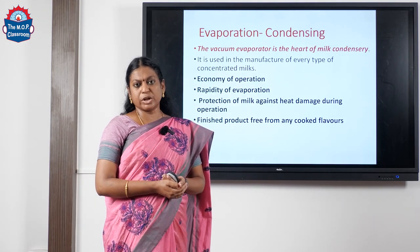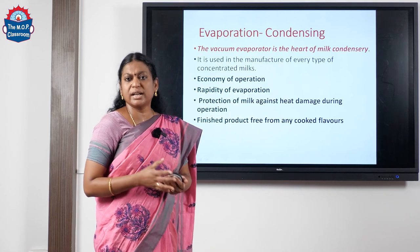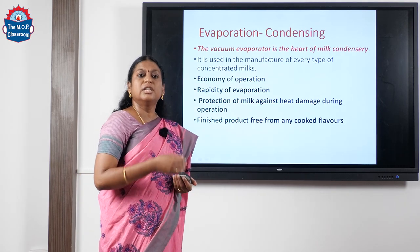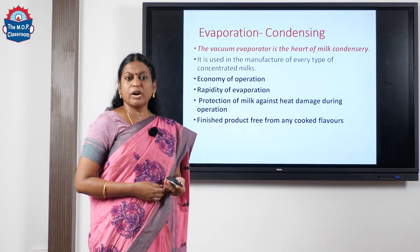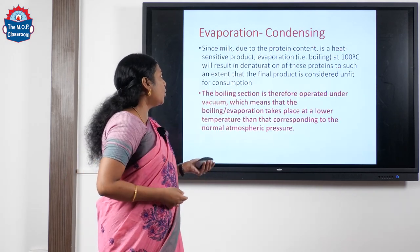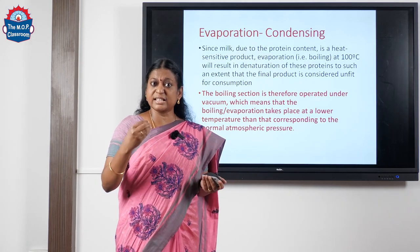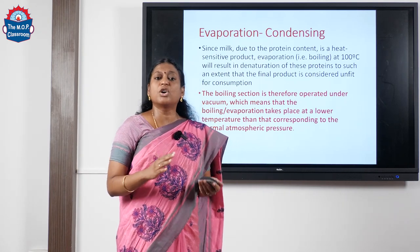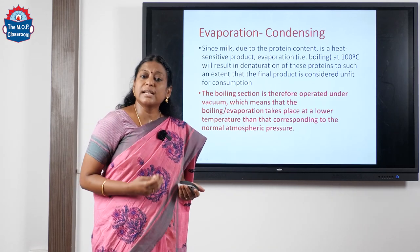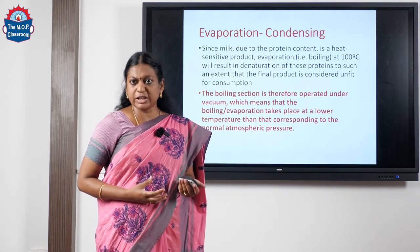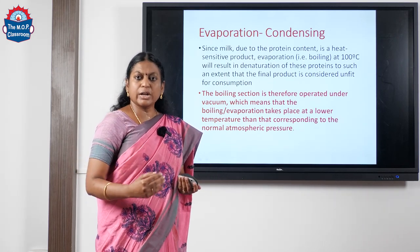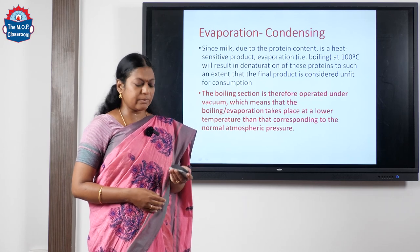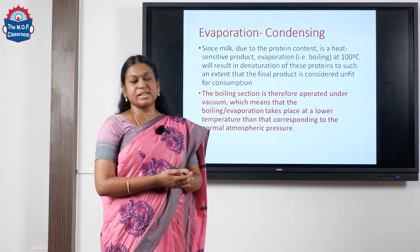Usually we do evaporation under vacuum. Vacuum evaporation is the heart of our milk condensery — why? The economy of evaporation, the rapidity of evaporation, protection of milk from heat damage, and the finished product has no cooked flavor. Milk is a heat-sensitive product; its protein undergoes a lot of changes when heated. Heat damage to protein gives a cooked flavor which makes the finished product unacceptable. So we prefer heating the milk in vacuum, where boiling takes place at a lower temperature, preventing heat damage during condensation.